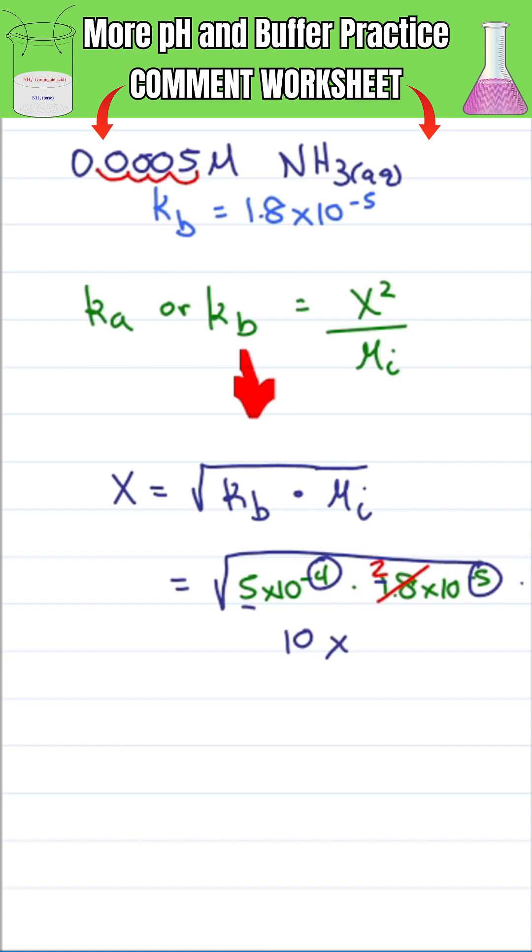Add the exponents, minus 4 and minus 5, giving me 10 to the minus 9. 10 times 10 to the minus 9 equals 1 times 10 to the minus 8. Divide the exponent by 2 to find the square root, giving me 1 times 10 to the minus 4, which is our OH- concentration.